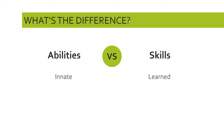A skill is something that you can learn, develop, and take on board — something that you can acquire. So abilities are innate, inbuilt, genetic perhaps, whereas skills are not there from birth; they are learned over a course of time.